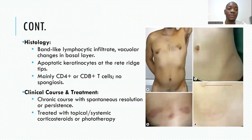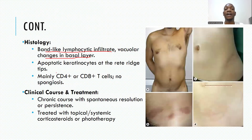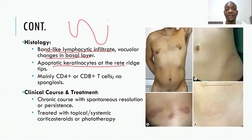On histology, this condition has a distinctive picture where you get a band-like lymphocytic infiltrate with vacuolar changes in the basal layer, and apoptotic keratinocytes at the rete ridge tips.